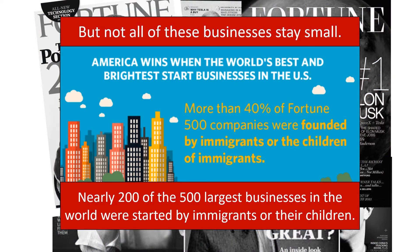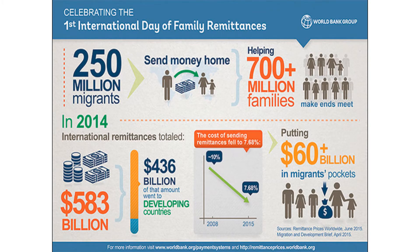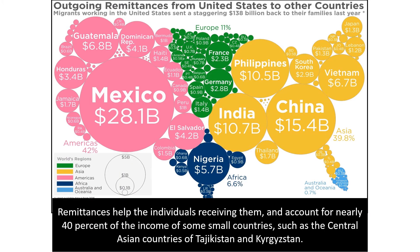Not all of these businesses stay small — nearly 200 of the 500 largest businesses in the world were started by immigrants or their children. Since immigrants generally move from poorer to wealthier regions, they can afford to make remittances — money sent to family and friends in the country they left. From this map of remittances from the US, Mexico, China, India, and the Philippines receive the most. Remittances account for nearly 40% of the income of some small countries like Tajikistan.